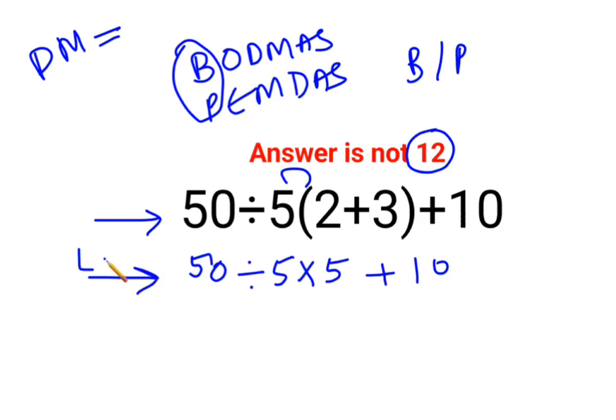So in sums like these you need to go from left to right. Whatever operation happens first on your left hand side has to be done first. So 50 divided by 5, that is 10 multiplied by 5 plus 10. So this is basically 50 plus 10.